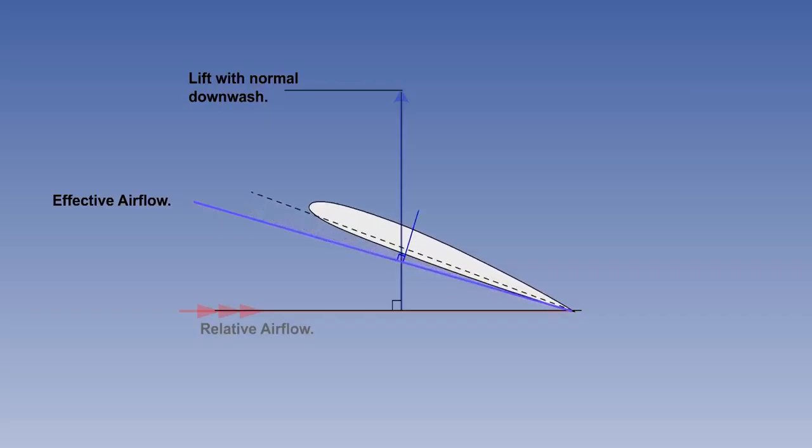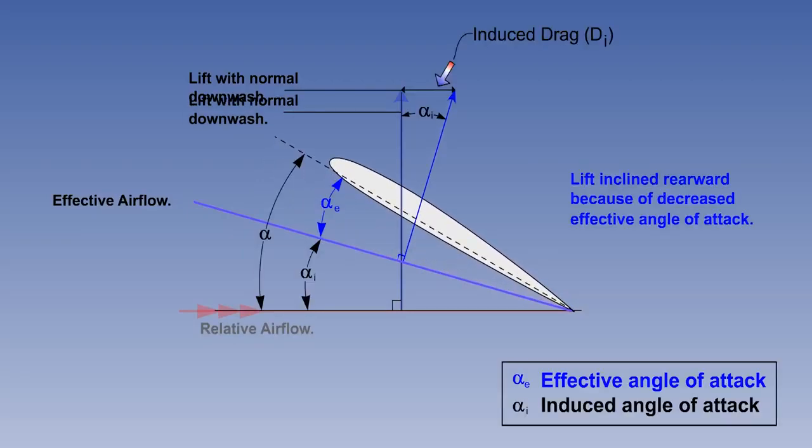To replace the lift lost by the increased upwash and downwash, the wing must be flown at a higher angle of attack than would otherwise be necessary. The rearward tilt of the lift vector caused by this extra angle is induced drag.